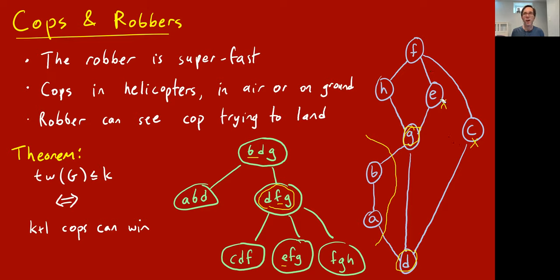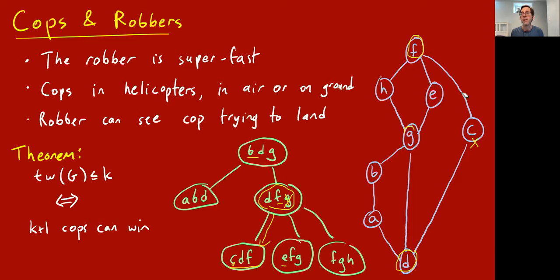The robber can only run around in the region containing F, H, E, C, etc. Maybe the robber runs to some vertex and the cop lands at F. Now the cops see the robber went to C, find C in the tree decomposition, and the cop at G flies up and heads to C. The robber is blocked by F and D, the cop lands on its head, and the game is won.